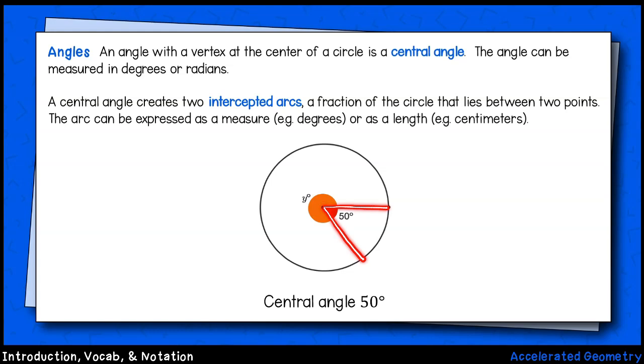The rays of that central angle create two intercepted arcs, one minor and the other major. Arcs can be expressed as a measure, such as degrees, or as a length, such as centimeters.